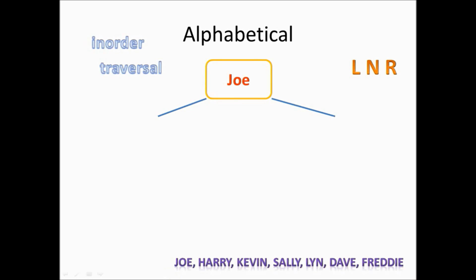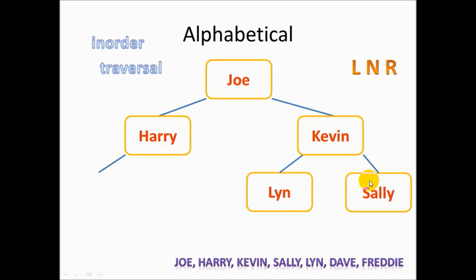And we start with Joe. Joe is our root node. And we go left. Is Harry before Joe? H is definitely before J. And then we go to K, Kevin. Well, H, I, J, K. So now we're going to go right. So left, definitely Harry's before Joe. Now Kevin is after, so that's right. What about Sally and Lynn? Well, Sally is definitely after K. And Lynn appears on the left-hand side.